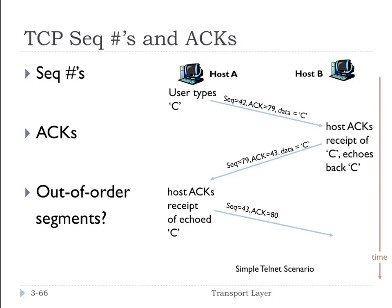To sum up: the key trick TCP is using is that the acknowledgement number that host A puts in its segment is the sequence number of the next byte that host A is expecting from host B. We're using sequence numbers and acknowledgement numbers which represent similar things to both sides of the communication. Depending on who is talking to whom, the sequence number and acknowledgement numbers will be swapped.